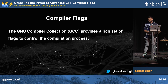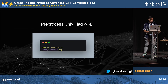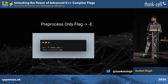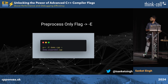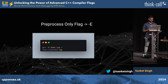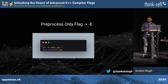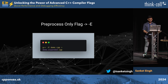Throughout the talk, I'll be mainly focusing on the GNU specific, the GCC specific compiler flags. So the first one is the `-E` flag. In this `-E` flag, only the preprocessor step — that is the expansion of the preprocessor — will actually happen, and that's it. It's going to pause there and not move ahead with the complete compilation process to convert to the final executable binary.